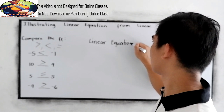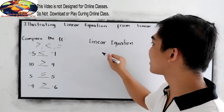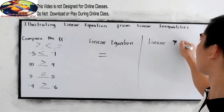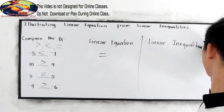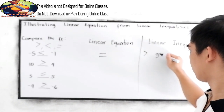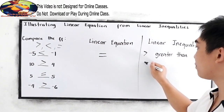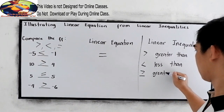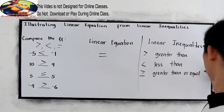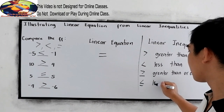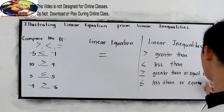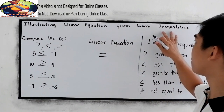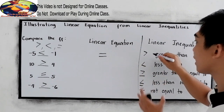In a linear equation we use only the equal sign. In inequalities, you will encounter the following symbols: greater than, less than, greater than or equal to, less than or equal to, and the symbol not equal to.